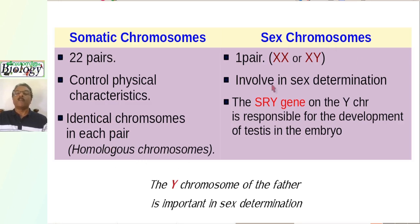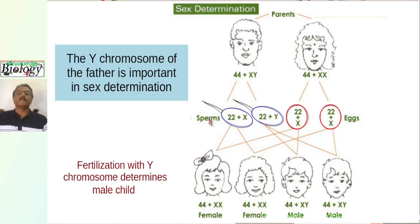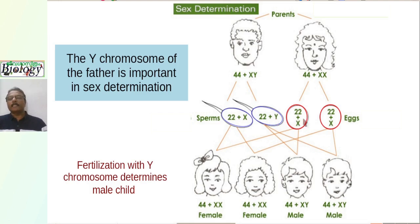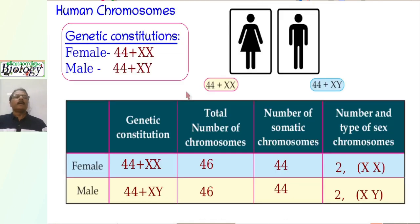Sex chromosomes are involved in sex determination, especially the Y chromosome, which contains the SRY gene. It is responsible for the development of testes in the embryo. The Y chromosome of the father is very important in sex determination. The fertilization of an X-containing sperm with any egg results in a female child, or XX. The fertilization of a Y-containing sperm with an egg results in a male child. The karyotype of a male is 44 plus XY and that of a female is 44 plus XX.